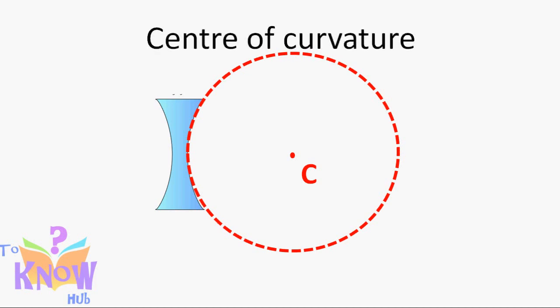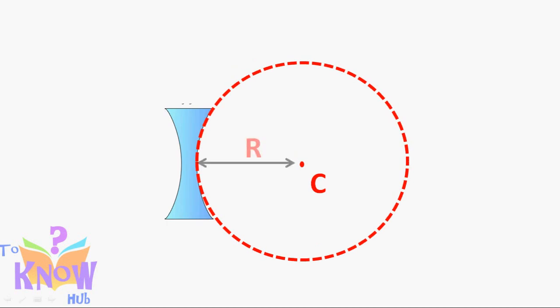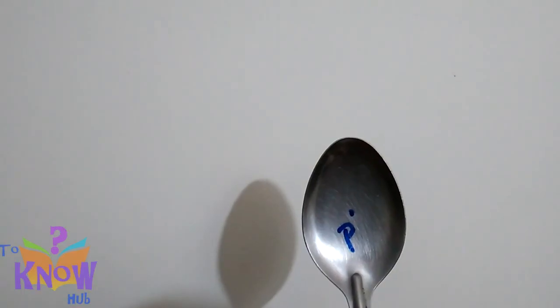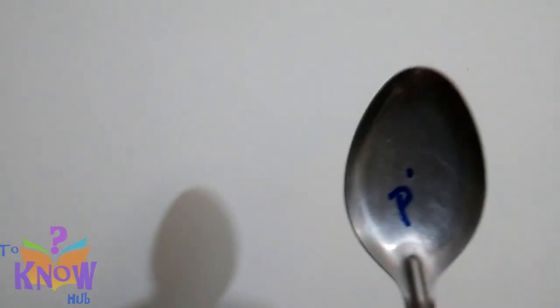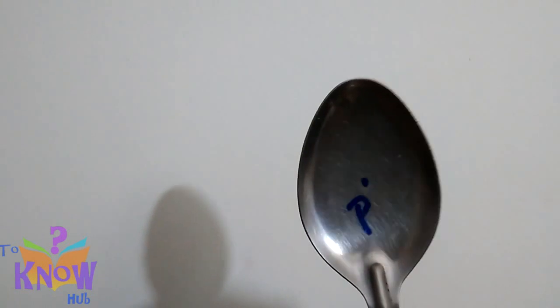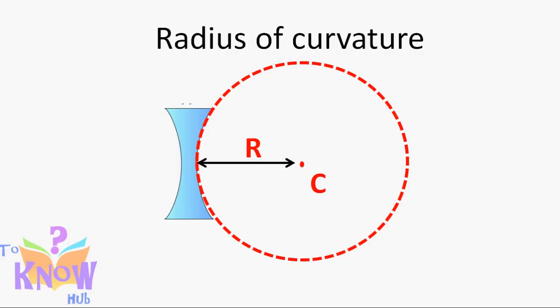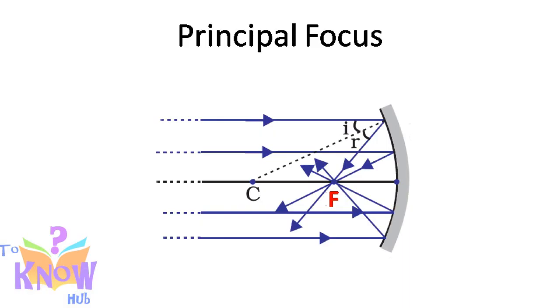The radius of that sphere is called radius of curvature. Now center of the reflecting surface, it's called pole. This point is on the mirror, right in the middle. The imaginary straight line that connects pole and center of curvature, it's called principal axis.